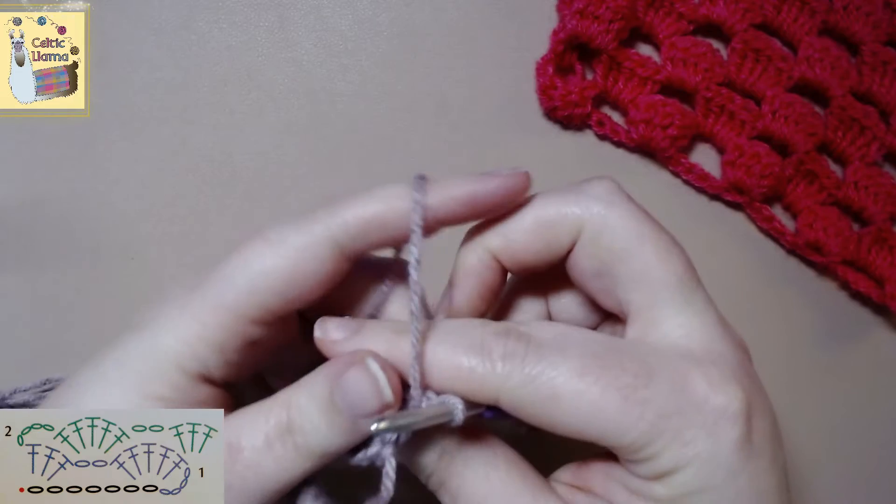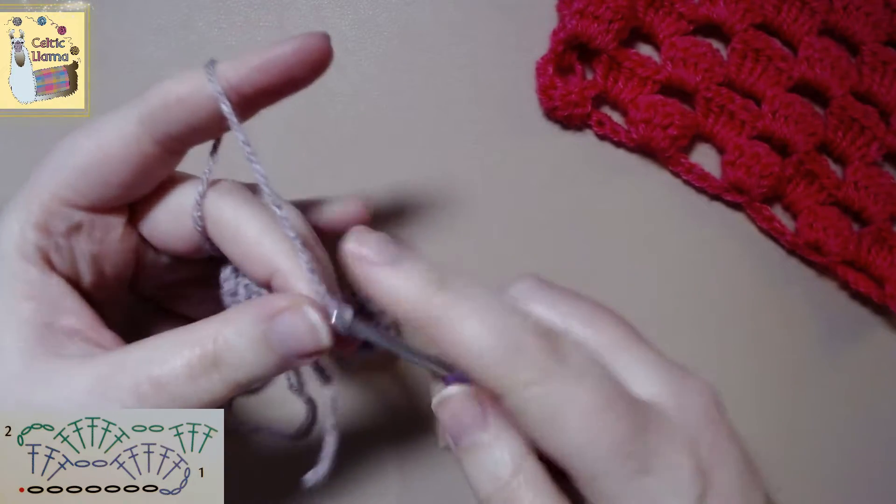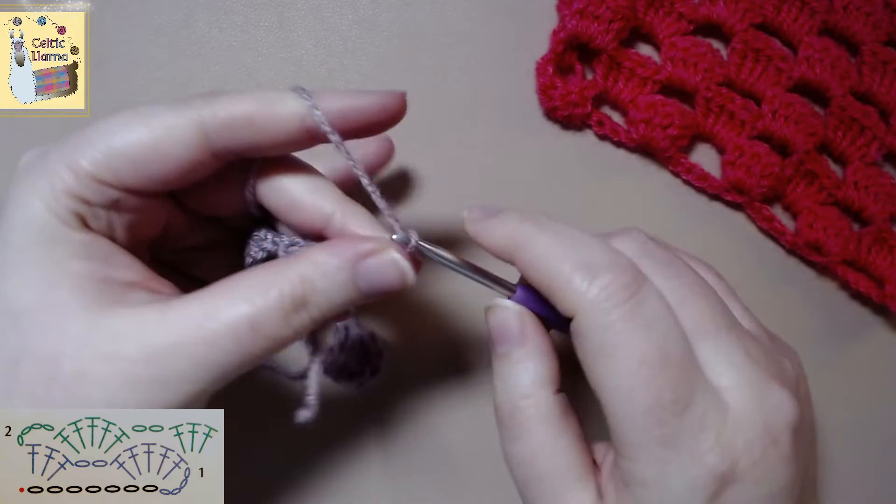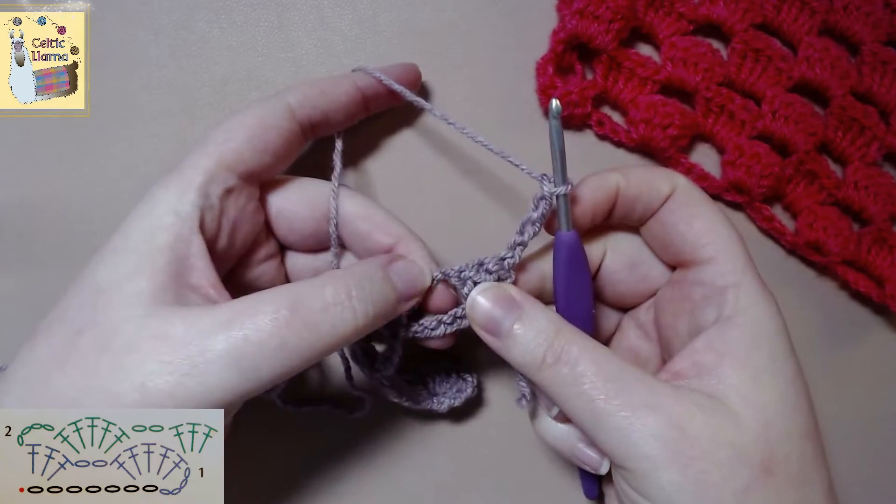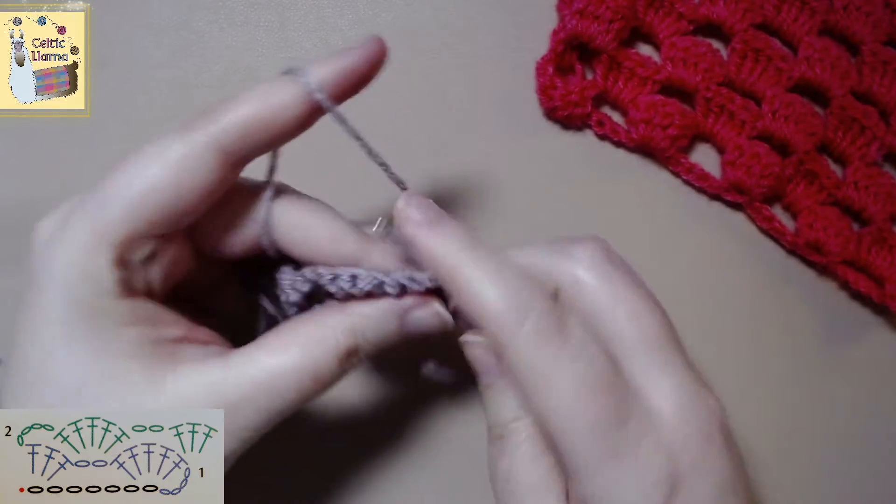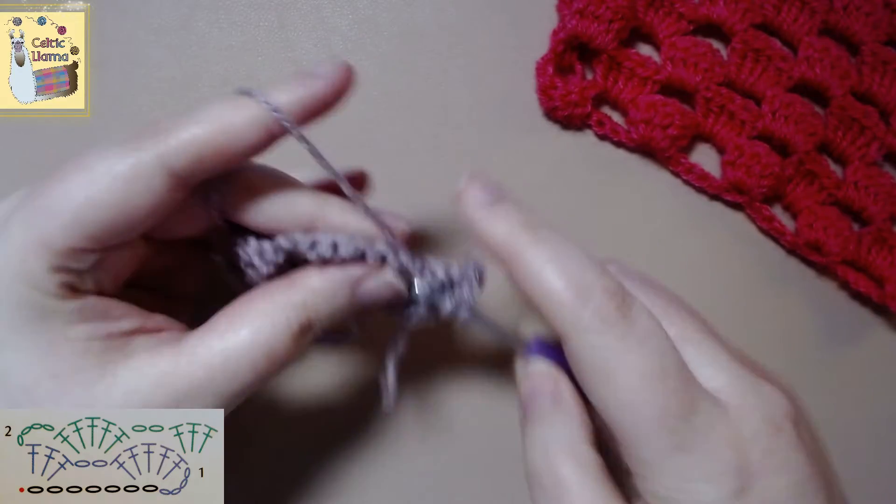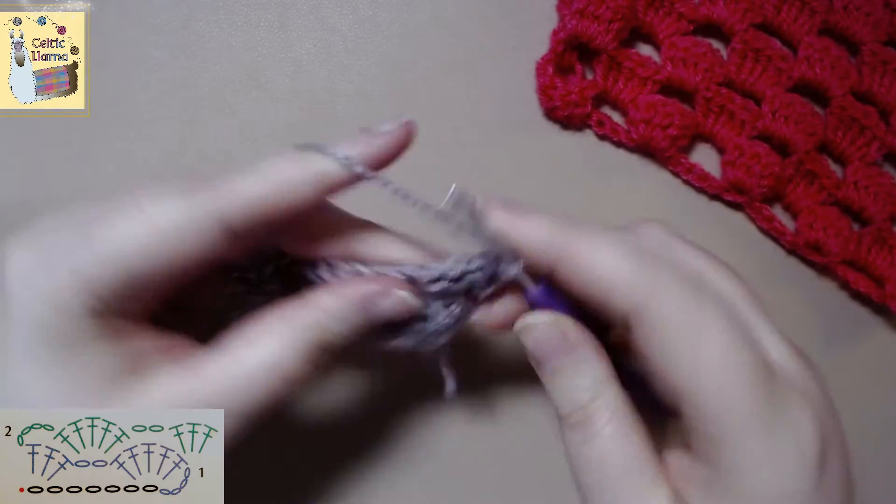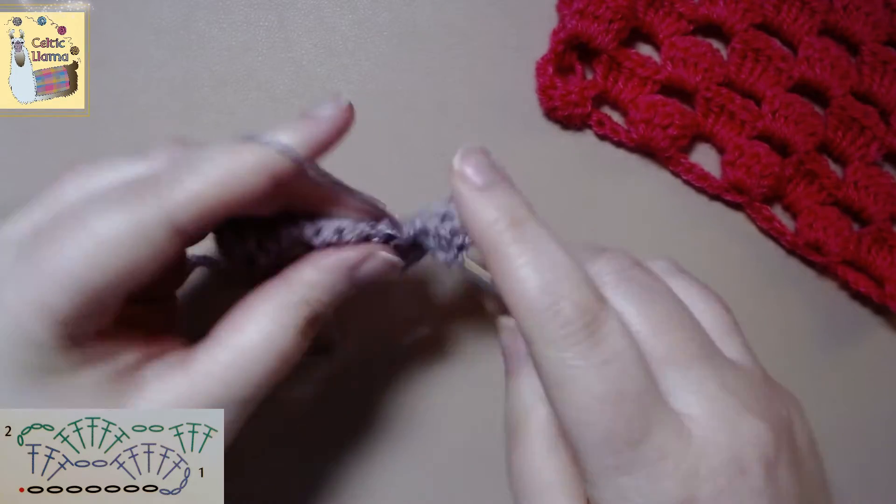To get started on row two, and this will be the repeat for all other rows, you want to start by chaining four. In that chain two space you want to work five double crochets. Always make sure that you start your work with that chain four.